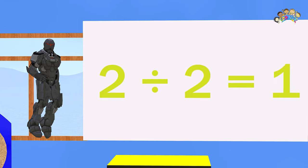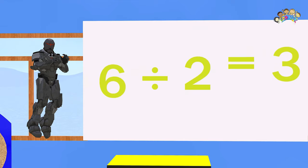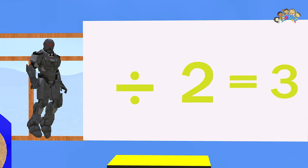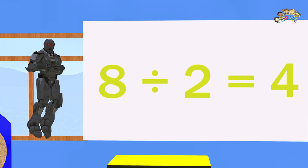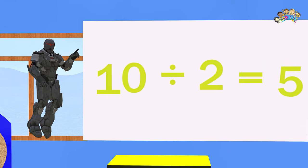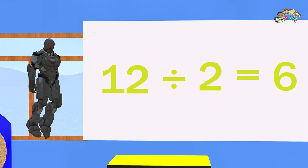Let's try the twos. Two divided by two equals one. Four divided by two equals two. Six divided by two equals three. Eight divided by two equals four. Ten divided by two equals five. Twelve divided by two equals six.